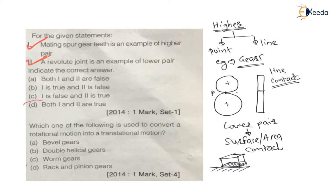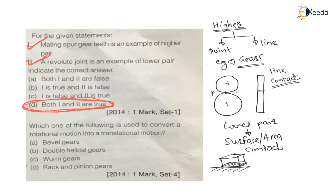Therefore option D is the correct choice for question one. This question is from Theory of Machines, but since it relates to gears it has been covered here. Now the second question was also asked in GATE 2014 but in a different set — the previous one was in set 1, and this one was asked in set 4, again for one mark. It is a very simple question.